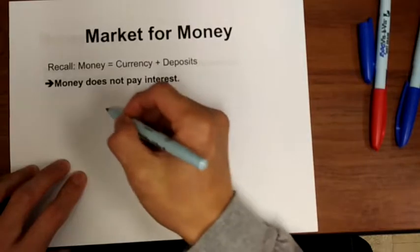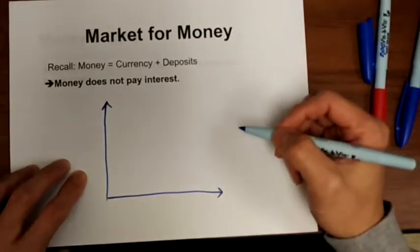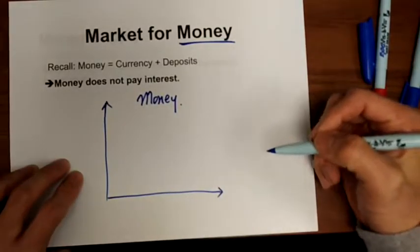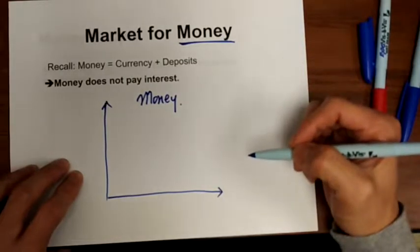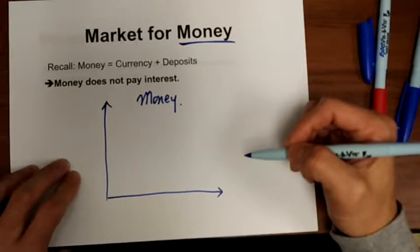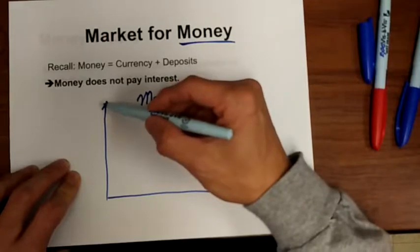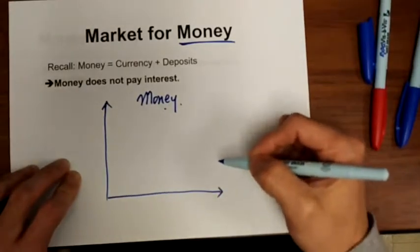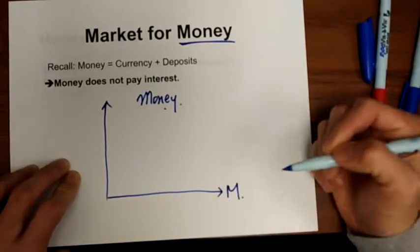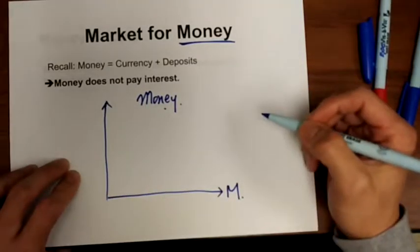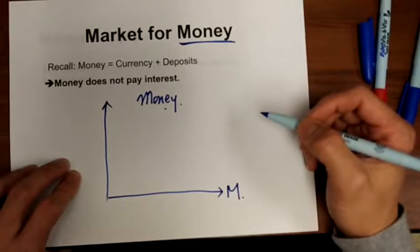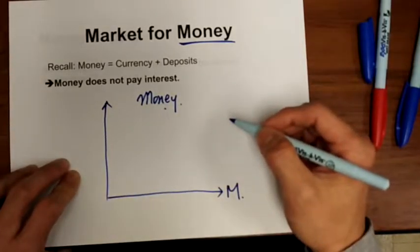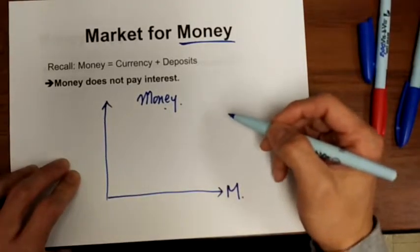Now we want to use demand and supply analysis to analyze the market for money. The good here is money, and we want to draw a money demand curve and supply curve. First, define the variables on each axis. The variable on the x-axis is the quantity of money — let's call it M. The variable on the y-axis is the price of the good, that is the price of money. If you want to borrow money, what do you pay? The answer is interest rates.